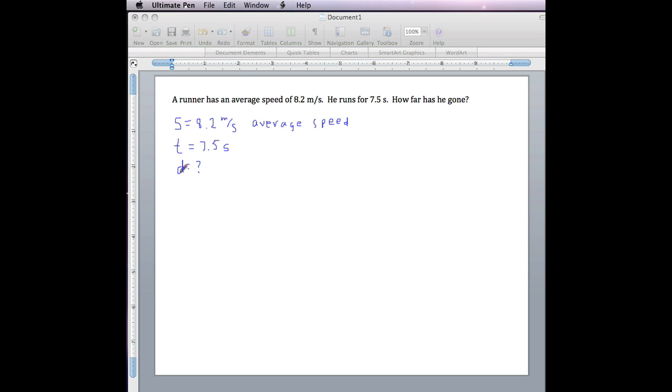The equation that involves average speed, time, and distance is S equals D over T, or average speed is distance divided by time.